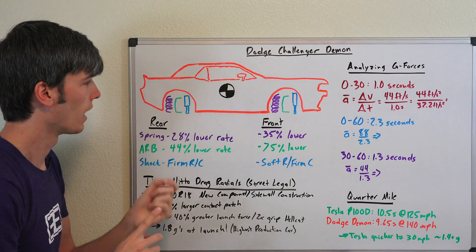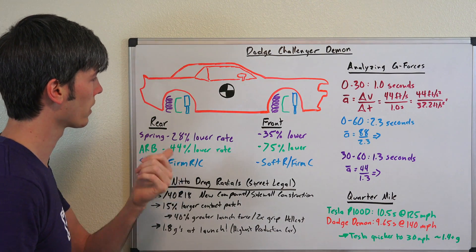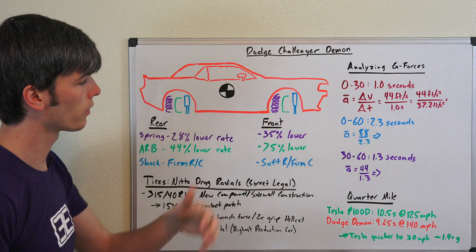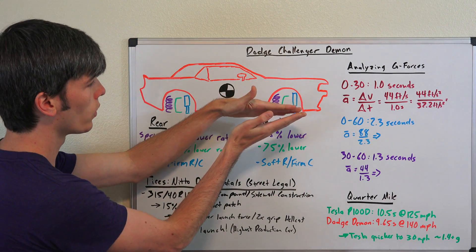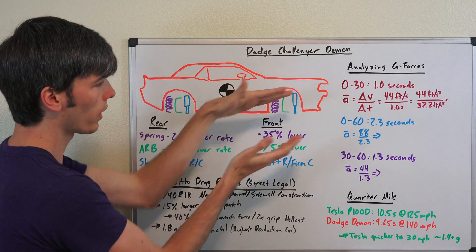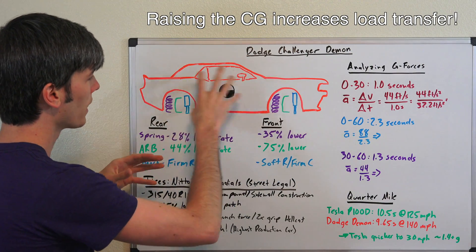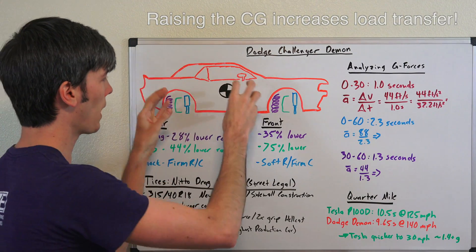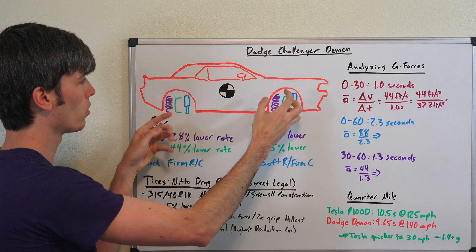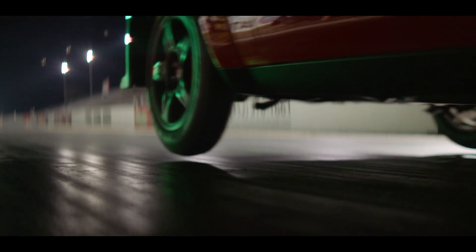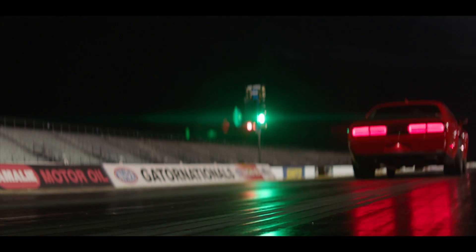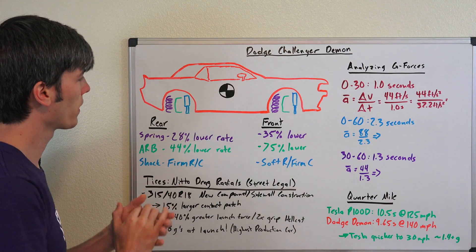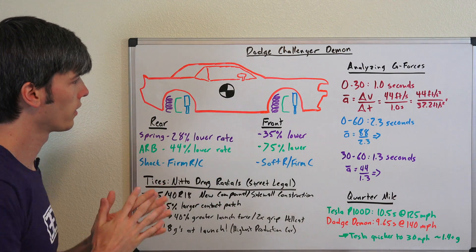The other thing they've done with the dampers is they have firmed up the rebound and compression in the rear. They have softened the rebound in the front and they have firm compression in the front. So what this means is it's going to be stable in the rear, in the front it's going to allow it to lift up. So all of the load is going to be on those rear tires. And it actually will lift up the front wheel. It's the first production car to do this. I think they say 2.92 feet is how long they can carry the front wheel in the air.